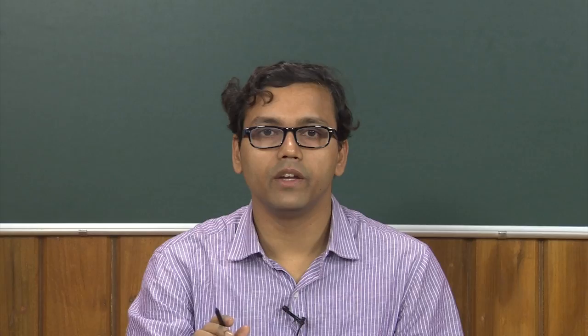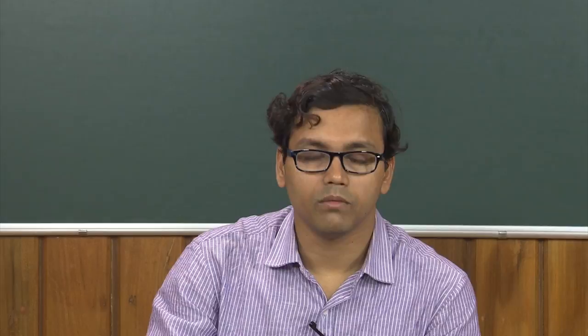Next we need to classify radioactive wastes. Different countries use their own classification methods — the US classification is quite different from the UK's. To get a generalized idea, we follow the classification proposed by IAEA, the International Atomic Energy Agency, which is the international body related to atomic energy. It has several nuclear-powered countries as members, including India, the United States, and the UK. According to IAEA, we can classify radioactive waste into 6 categories.